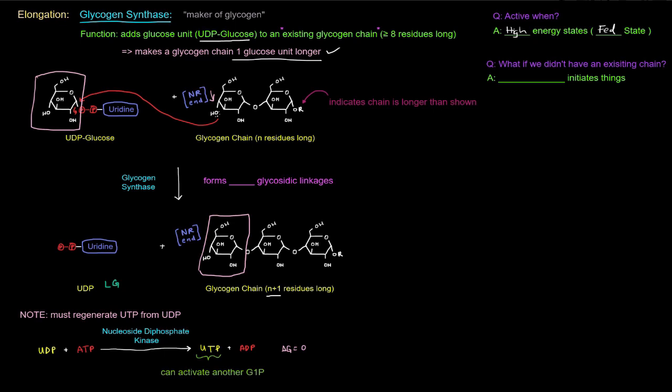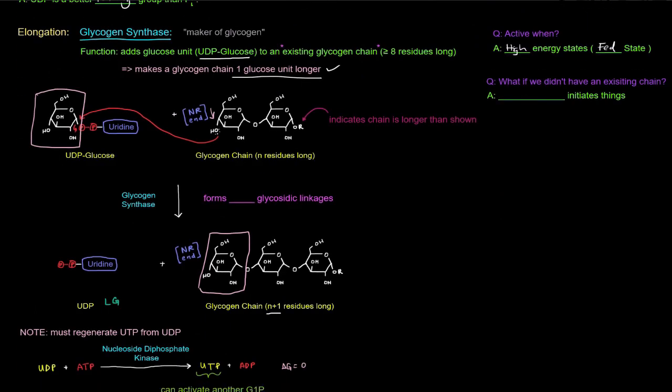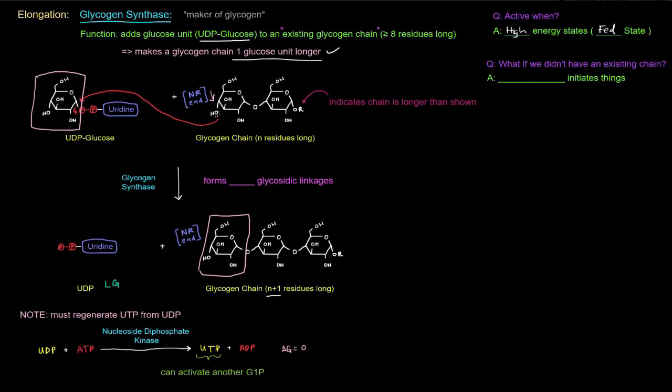So this UDP that we made, its story is not really over. We need to turn that back into UTP so that we can have that previous reaction occur again, so we can activate another glucose 1-phosphate. So we need to regenerate UTP using that UDP. So that UDP is going to combine with ATP and ATP is just going to give up one of its phosphates to UDP to basically turn UDP into UTP and ATP loses the phosphate to become ADP. This is catalyzed by nucleoside diphosphate kinase, and this is an isoenergetic process. The delta G is zero.